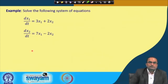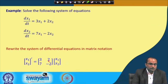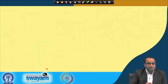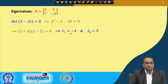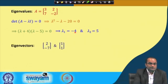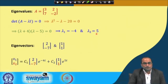As a demonstration, consider the system with coefficient matrix A = [3, 2; 7, −2]. Writing it as ẋ = Ax, we compute the characteristic polynomial and find eigenvalues −4 and 5, with eigenvectors [2, −7] and [1, 1] respectively. The general solution is then x(t) = c₁e^(−4t)[2, −7] + c₂e^(5t)[1, 1].